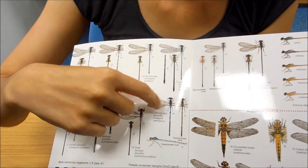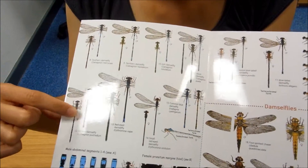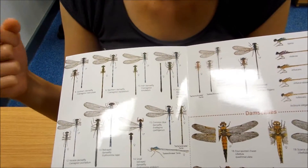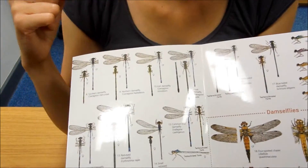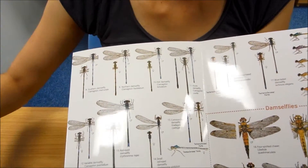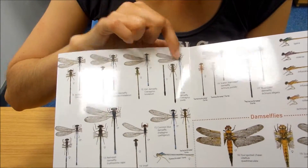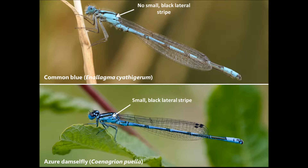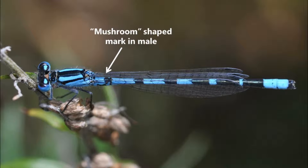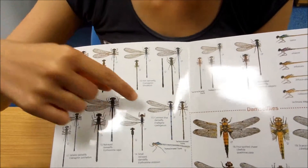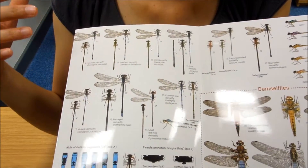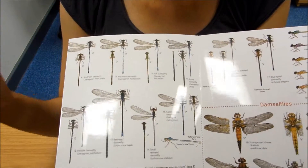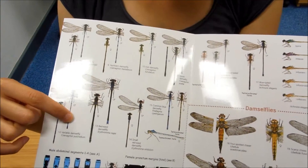The common blue damselfly is also very similar in color and shape to the other Coenagrion species. What it does have is a tiny strip on the lateral part of the thorax that goes only halfway, whereas the azure damselfly doesn't have it. However, this species prefers large lakes, rivers, or large water bodies, so it's unlikely you'll find it in your garden pond unless it's very large.